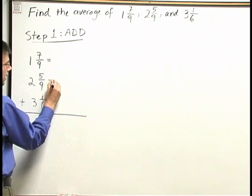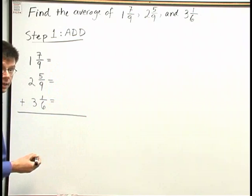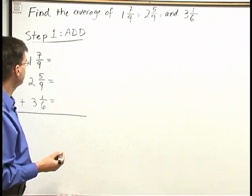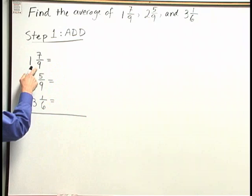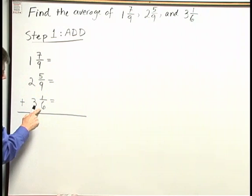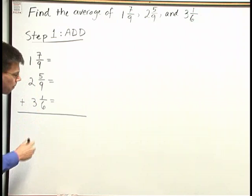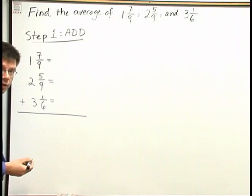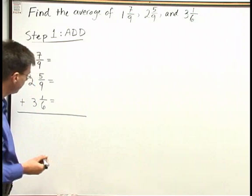In order to add these three, I need a common denominator for my fractions. My denominators are two nines, I have a nine here and a nine here, and a six. Why don't you try to guess what the common denominator is before we go ahead and calculate.